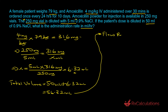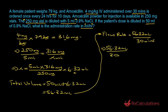Now we can determine the flow rate. Flow rate is volume per time, so we take 56.32 milliliters divided by the infusion time of 30 minutes. Since the question asks for milliliters per hour, we convert using the factor that 60 minutes equals 1 hour. The minutes cancel out, and we end up with 112.64 milliliters per hour.